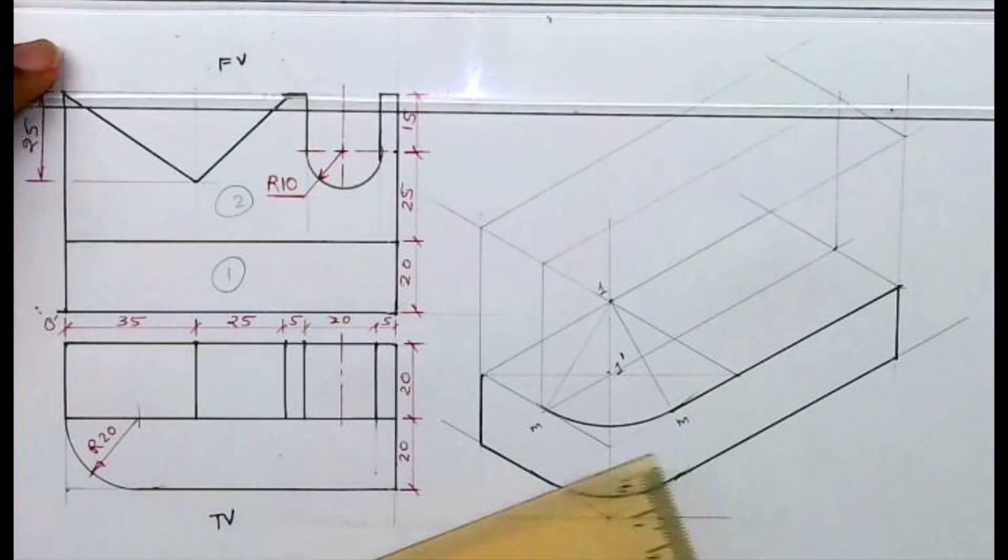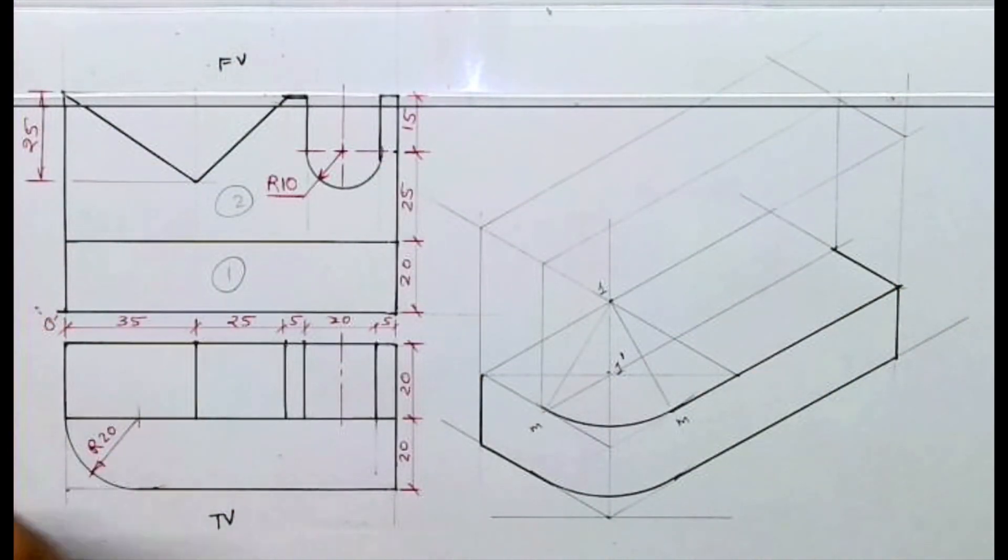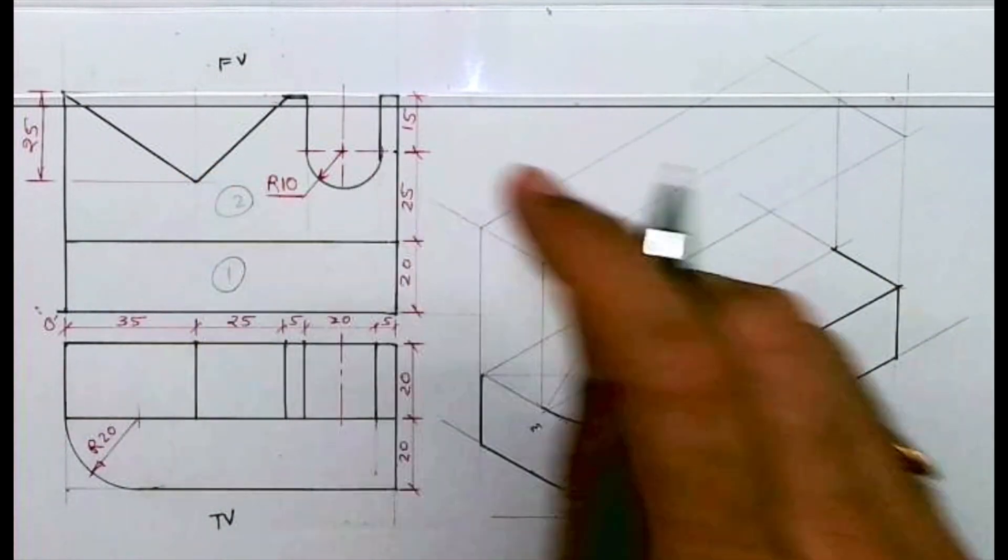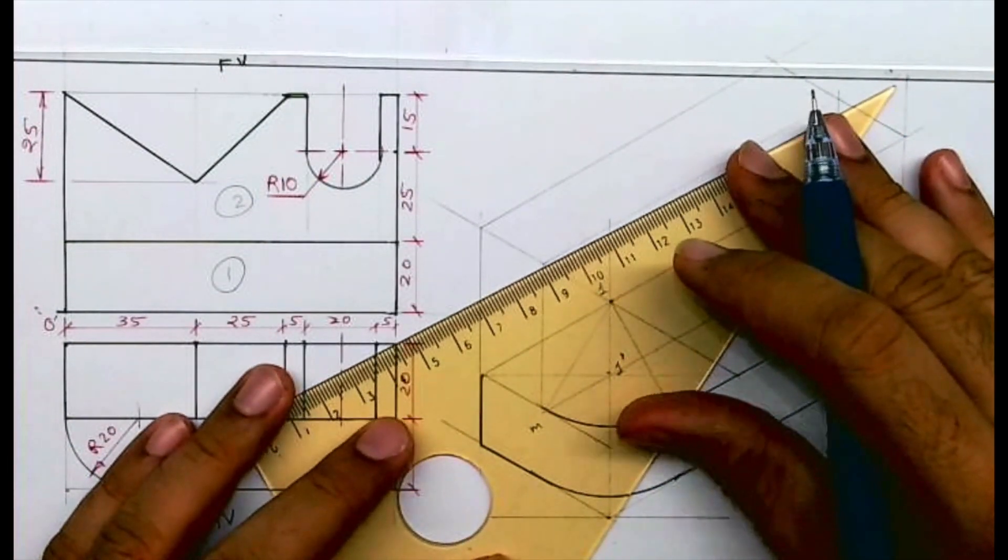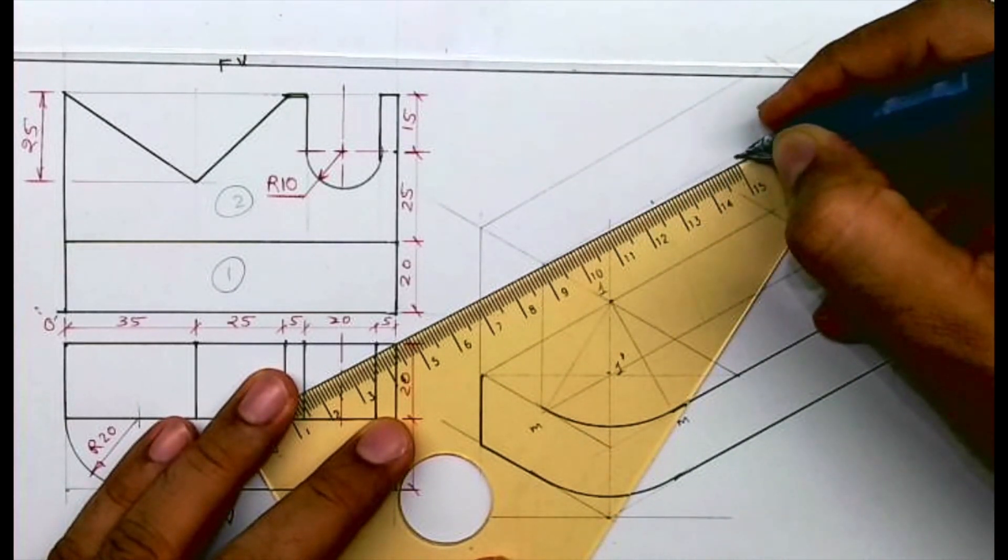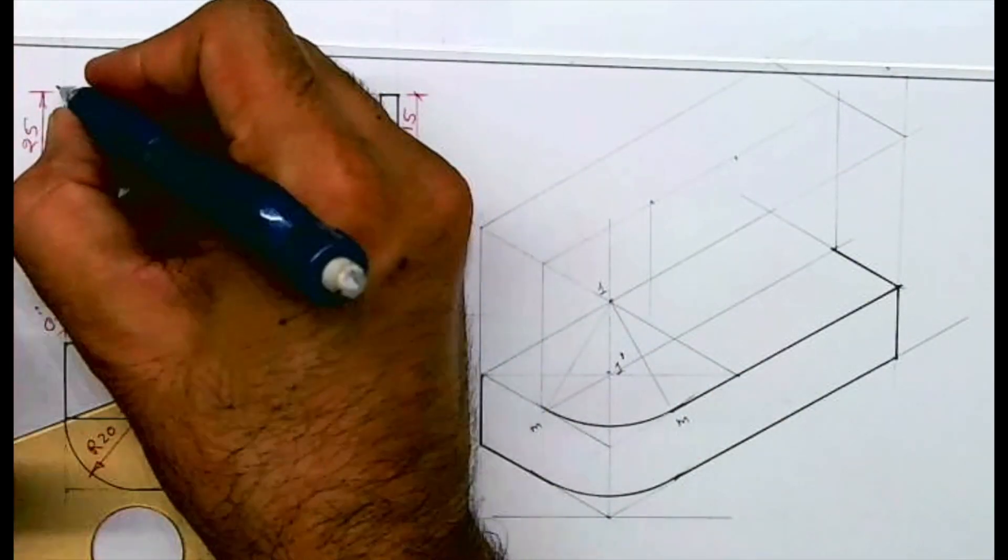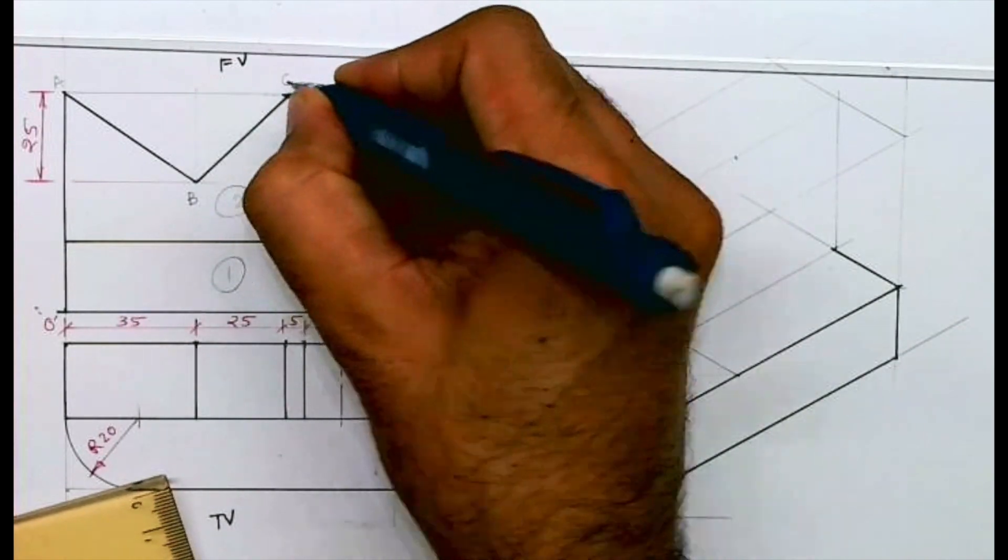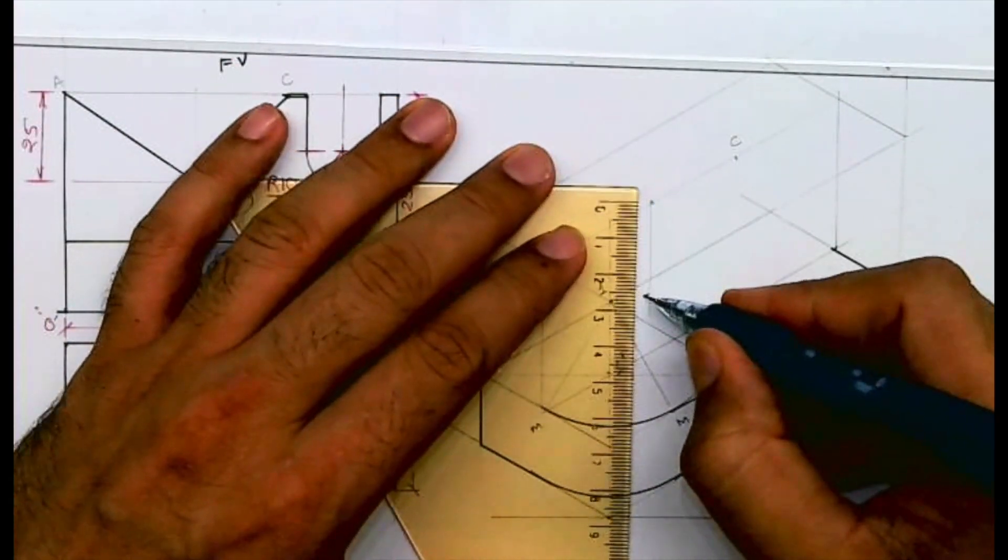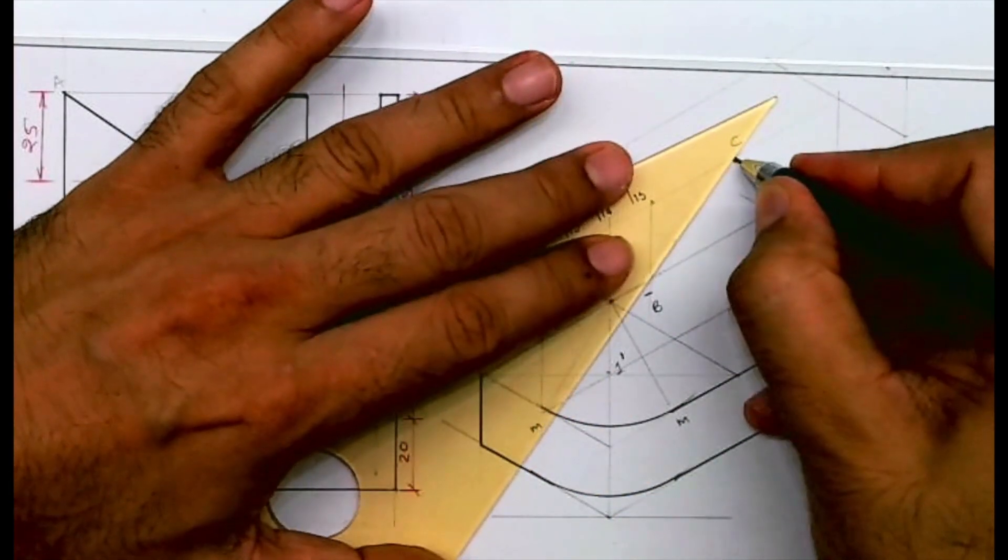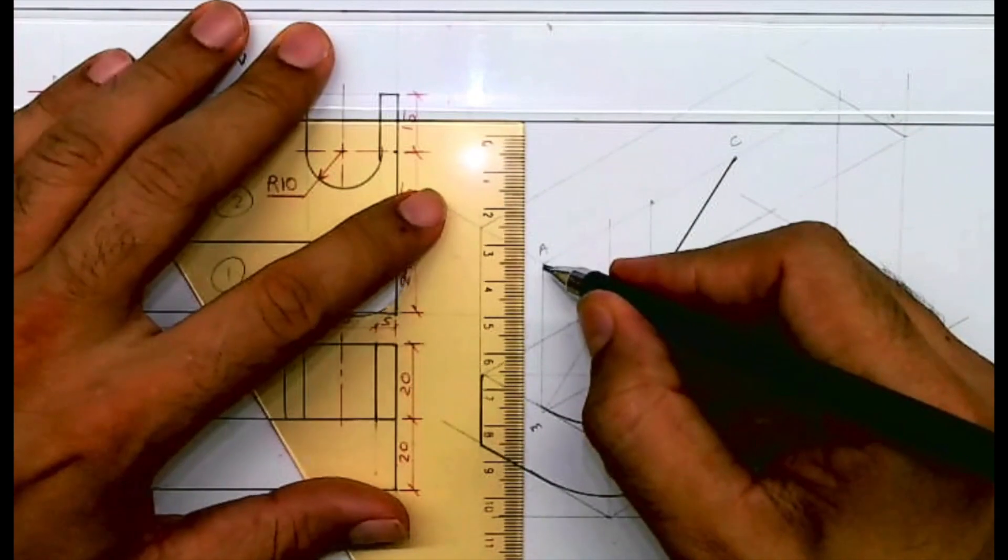Now I need to draw part 2. See this, part 2 is 20 behind. Now we need to draw this part so I'll name this part as ABC. The distance is 35 plus 25. This is A, this is B, this is C. So A, C, and B is here. You have to go down by 25. Then you join B to C and from A you draw vertical line.